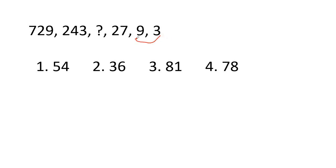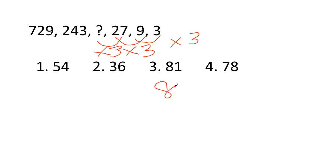Next: 729, 243, question mark, 27, 9, 3. The pattern is divide by 3 each time: 729÷3=243, 243÷3=81, 81÷3=27, 27÷3=9, 9÷3=3. So the missing value is 81. That's correct.